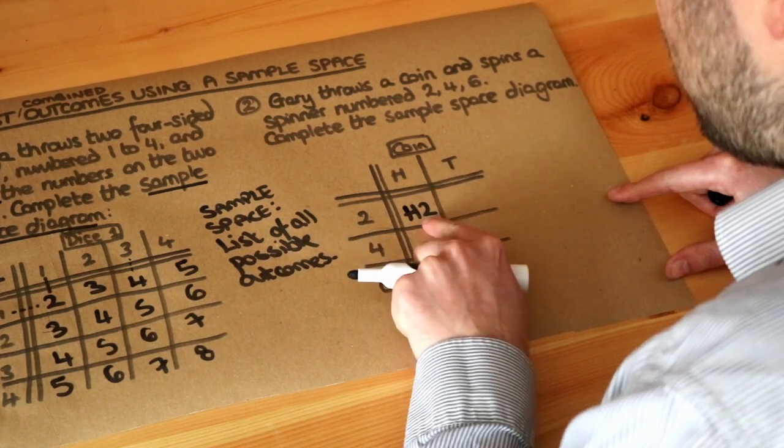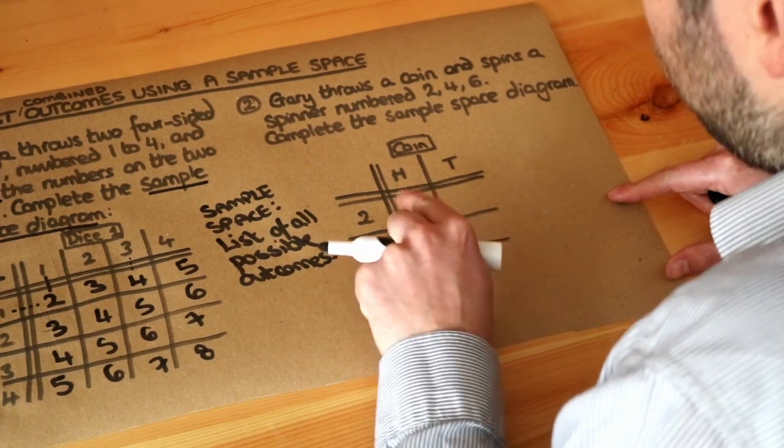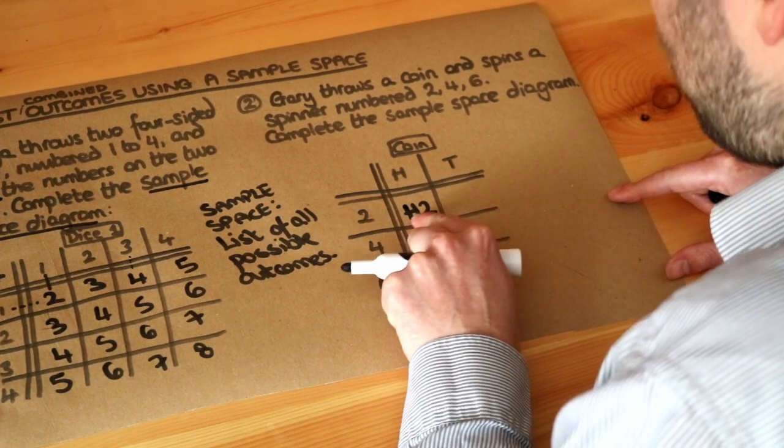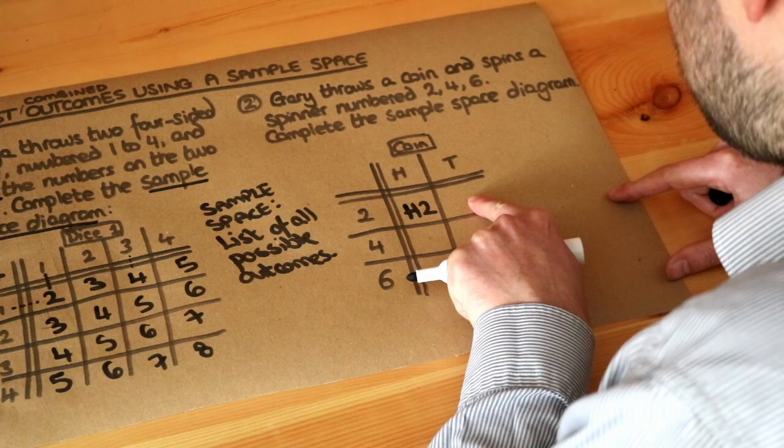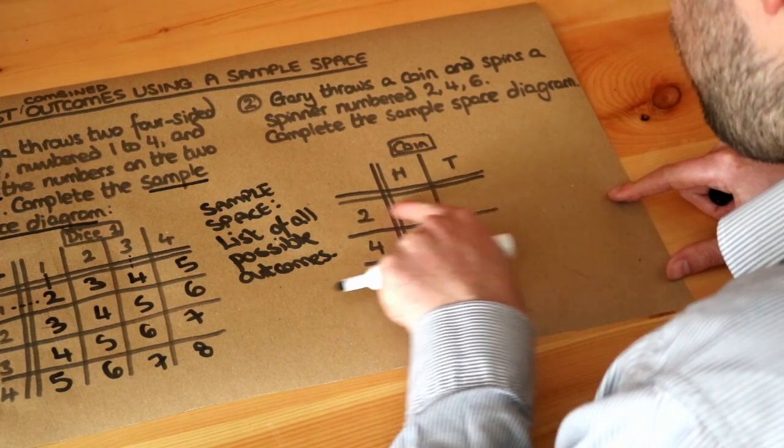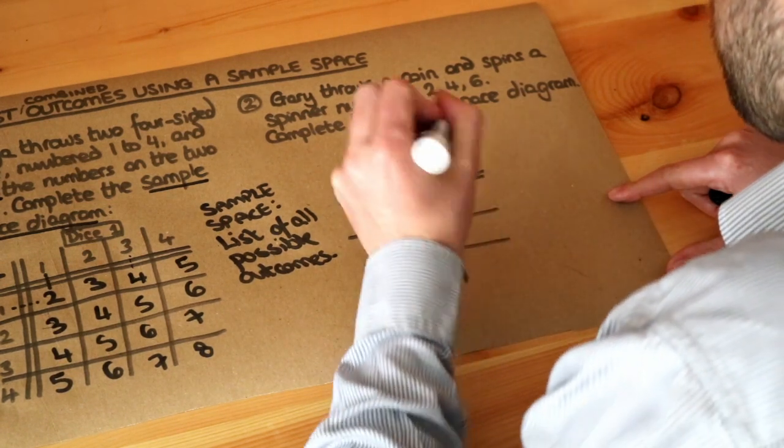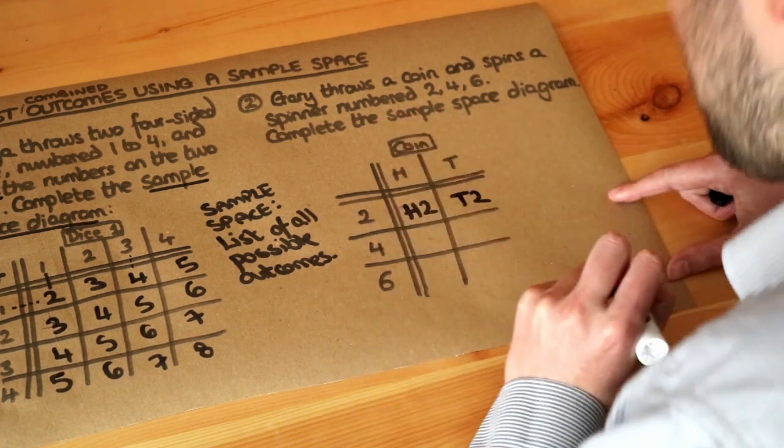What about here? Well, if we look at the column we've got tails, if we look at the row we've got a two on the spinner, so let's just put T2. But let's be consistent. If we put the coin first, then we need to put the spinner second for consistency.